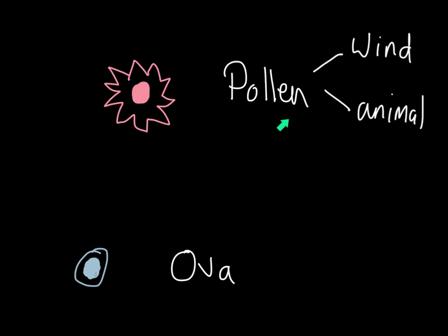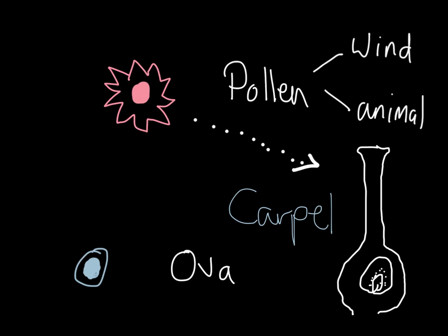The pollen is specially adapted either to be transferred by wind — like a parachute or some big net-like device that can catch the wind — or by animal, usually insects, where it can be sticky with hooks to stick on to them. So the pollen moves either by wind or by insect to the carpel.